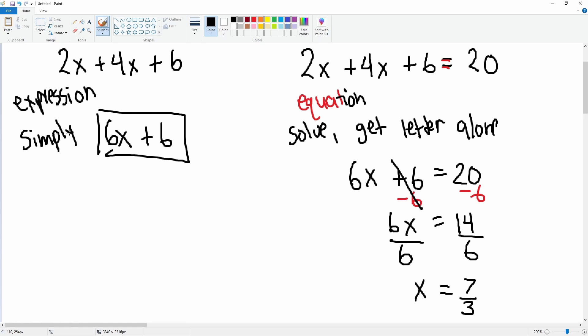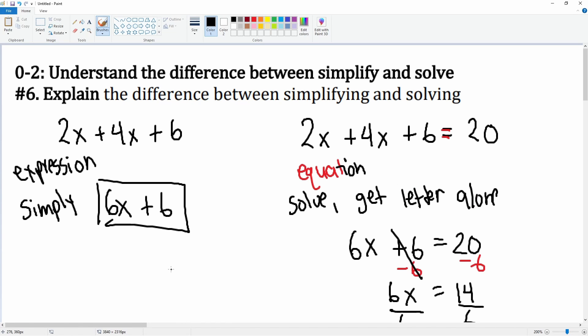So that is an expression on the left, we simplify. On the right, it's an equation and that allows us to solve and get the variable alone by applying the inverse operation. So that is the difference between simplifying and solving.